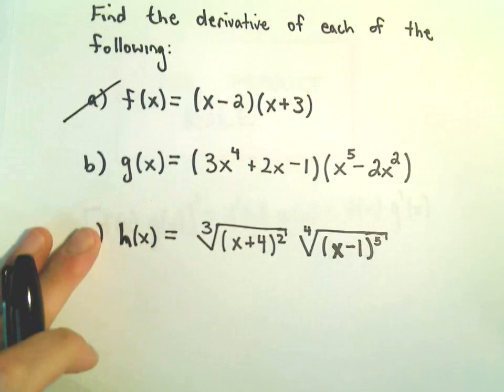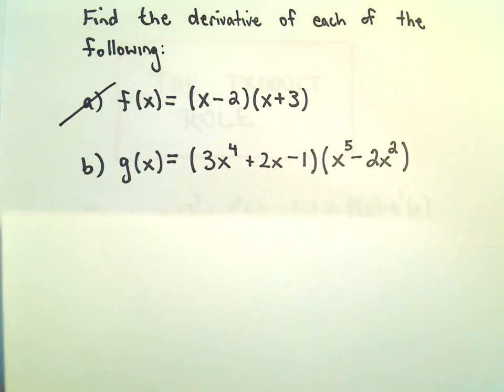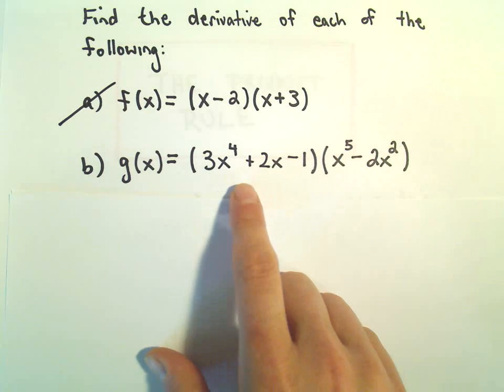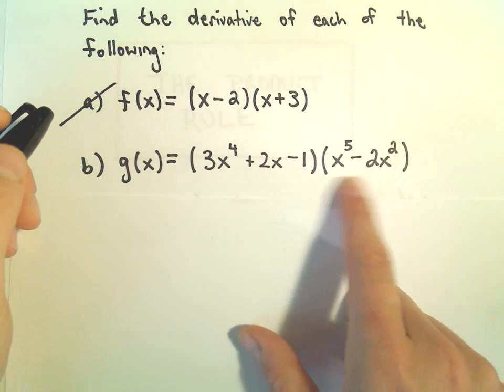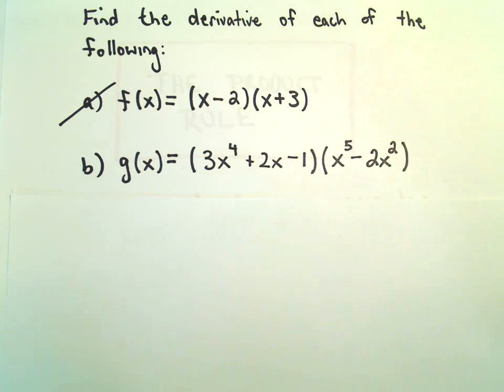Alright, in this video I'm going to do another example related to the product rule. Here we're going to take the derivative of g(x) = (3x⁴ + 2x - 1)(x⁵ - 2x²).